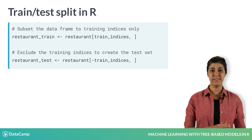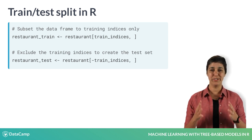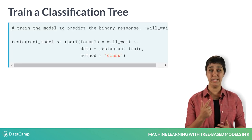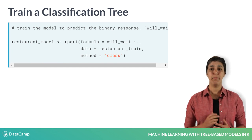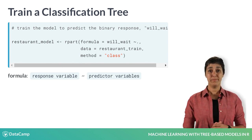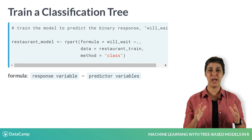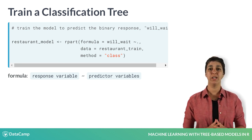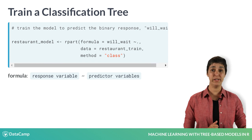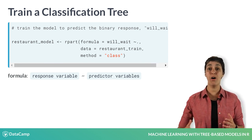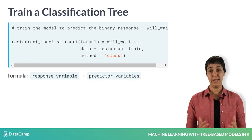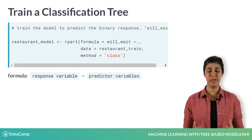Now that you have the training and the testing set, let's train a classification tree. To train a classification tree in R, you must specify the formula, the data, and the method. The basic format of formulas in R is response variable tilde predictor variables. The tilde is read as 'is modeled as a function of.' The dot symbol means all other variables in the data. The data will be our training set, and the method will be 'class', since we are dealing with a binary response.